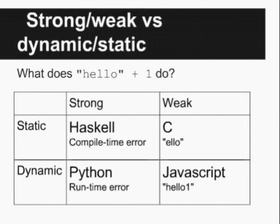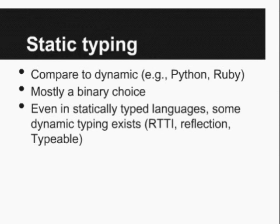That's a basic breakdown of strong versus weak, dynamic versus static. Static typing's opposite is dynamic typing — exemplified in languages like Python or Ruby — and it's essentially a binary choice. Within statically typed languages there are some features that exhibit symptoms of dynamic typing: C++ has RTTI, Java has reflection, and even Haskell has the Typeable class, which allows some aspects of dynamic typing. So for the most part a language is either static or dynamic, but there are some exceptions.